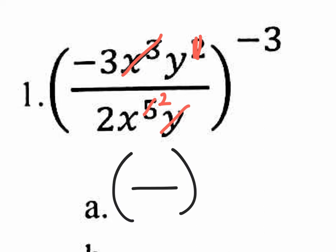You have a negative three on top, a Y on top, and a 2X on the bottom. And of course we still have the outside exponent of negative three.